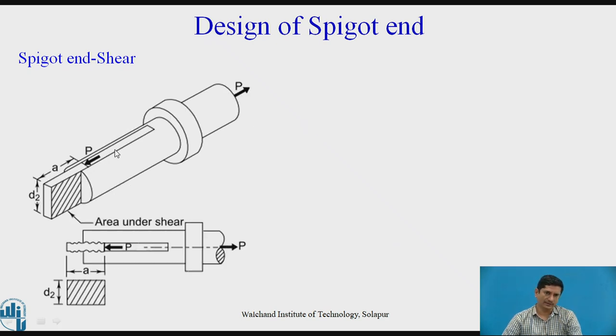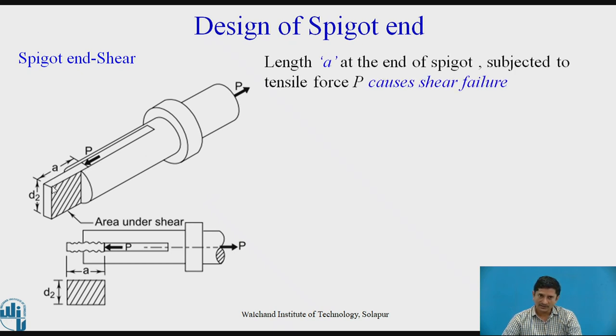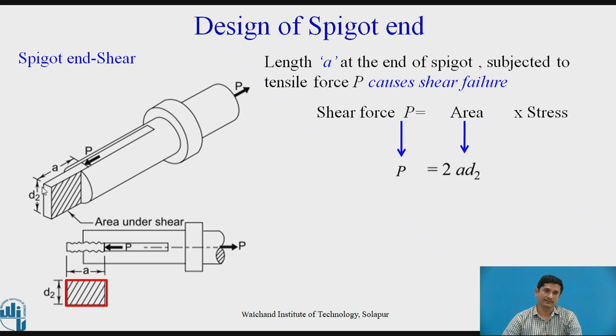Spigot end in shear. For the spigot, this slice will come out. I need to establish the area for this slice and need to equate it to the force. Length is A. This height is D2. I need to find out the equation for the shear force P. Area multiplied by stress. In this case, area is given as A into D2. But there is one more area behind this zone. It is double shear: 2AD2. We can calculate the length A.